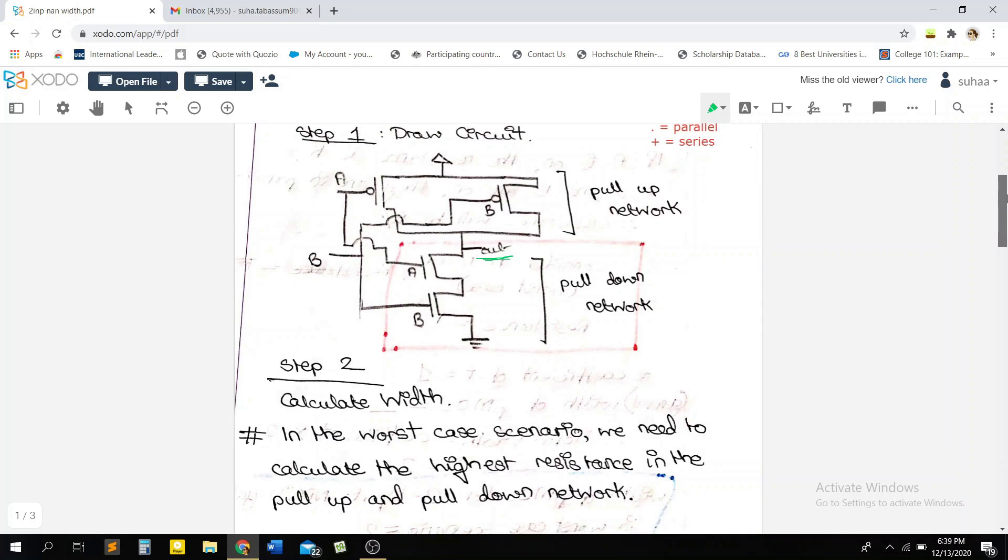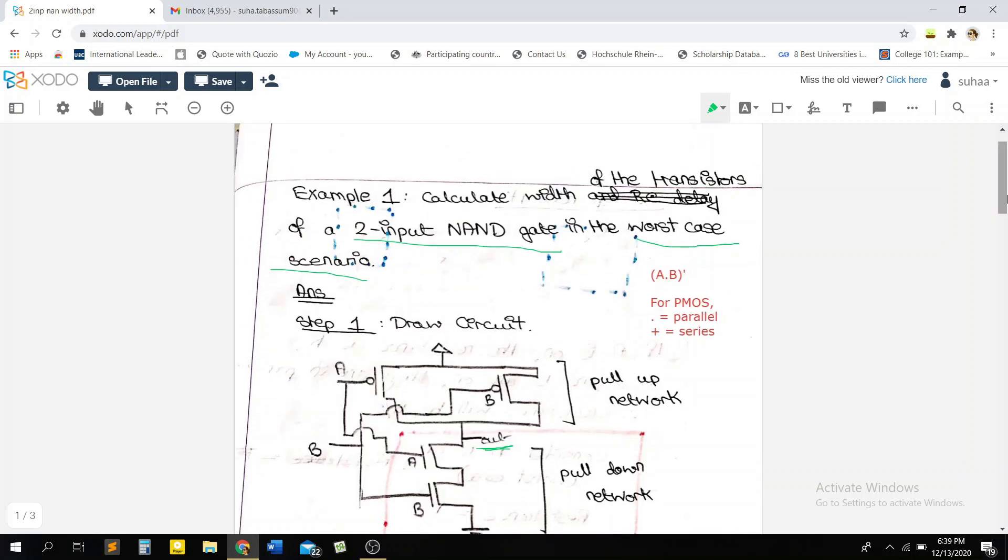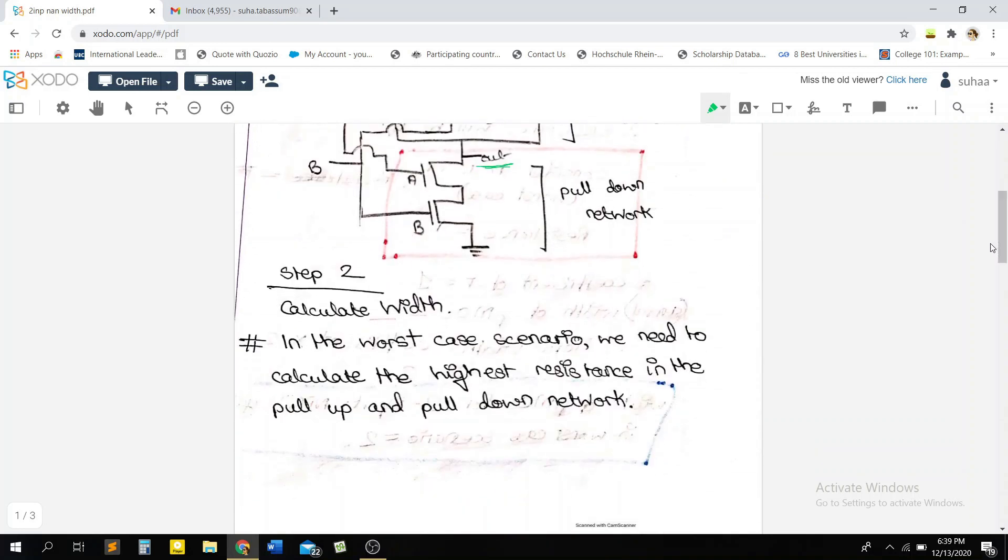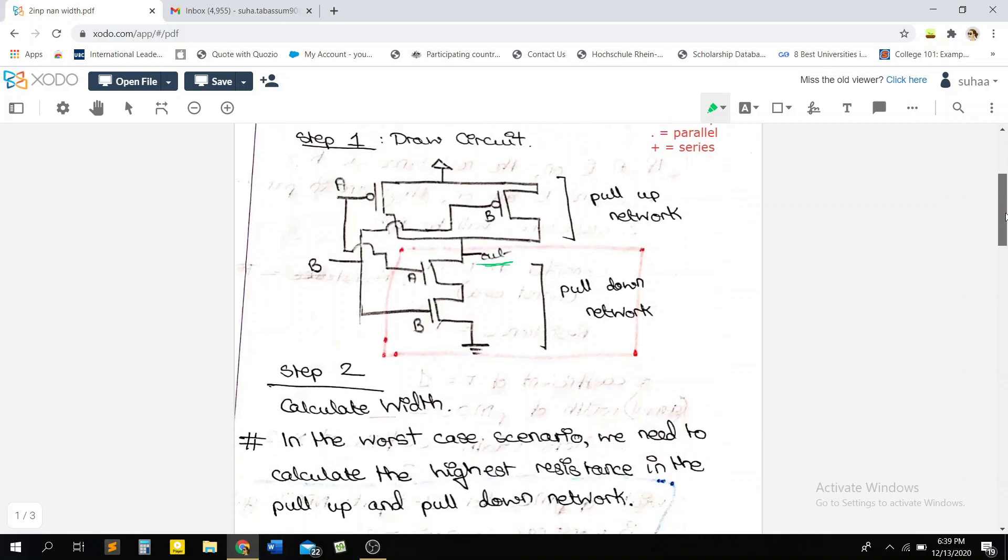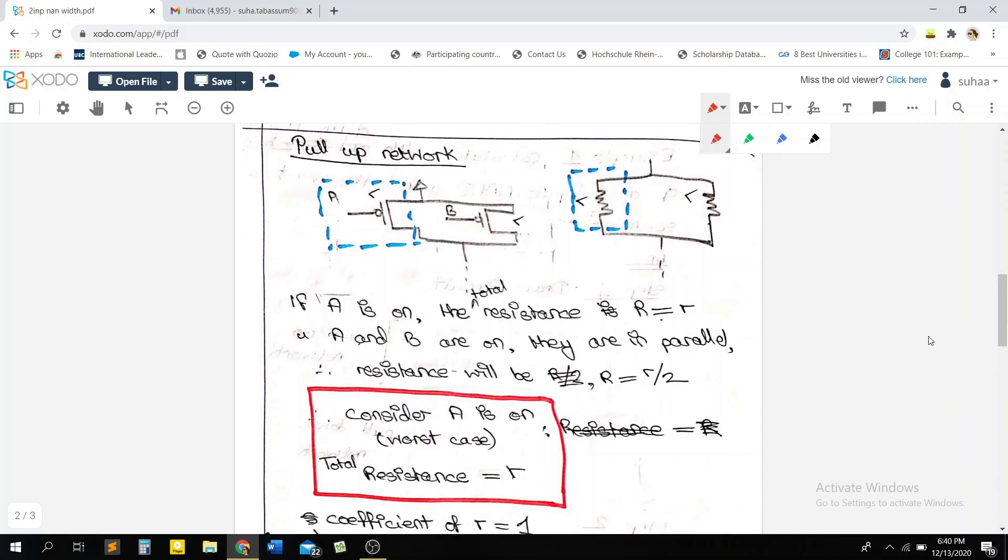So the first step is that we've drawn our circuit, and next now we have to calculate our width. Remember that we have to do it for the worst case scenario. The main concept here is that whenever we want to calculate something for the worst case scenario, we are going to need to find the highest resistance. Both in the pull-up network and in the pull-down network, we're going to have to solve it in a way that we get the highest resistance.